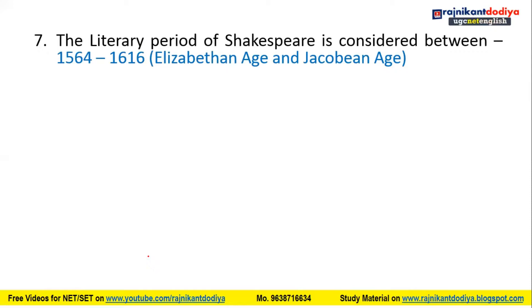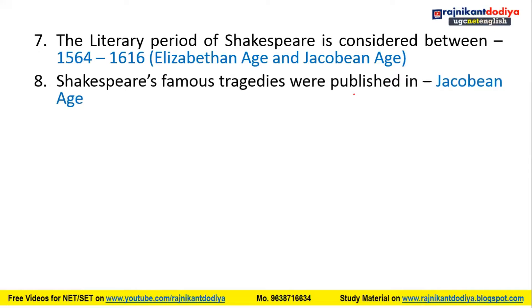The literary period of Shakespeare is considered between 1564 to 1616, covering the Elizabethan age and the Jacobean age. Shakespeare's famous tragedies were published mostly in the Jacobean age, not in the Elizabethan age.